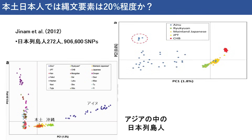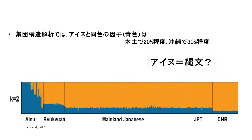アイヌを含んだ研究はジナムエトワールによって2012年に行われており、日本列島人272人を用いており、アイヌの人たちが36人含まれています。主成分分析の結果、アイヌが遺伝的にかなり独自な集団であるということが分かります。さらに多くの東アジア集団を入れた主成分分析でもアイヌの遺伝的な独自性が明瞭に見て取れます。また遺伝的に近い集団が東アジア大陸部に全く存在していないということも重要です。